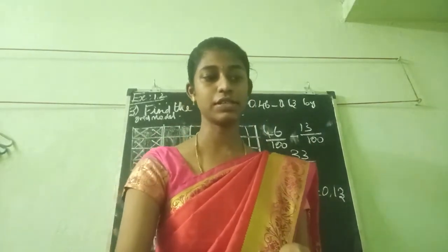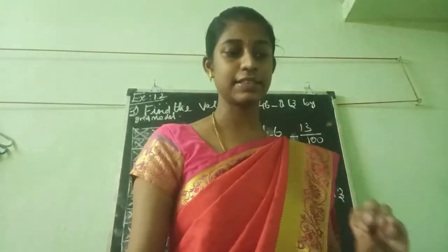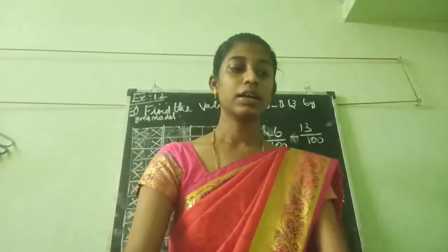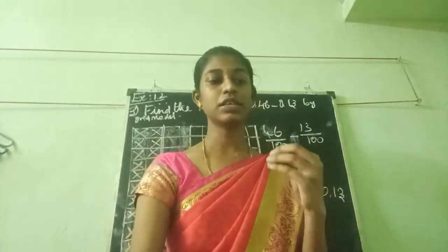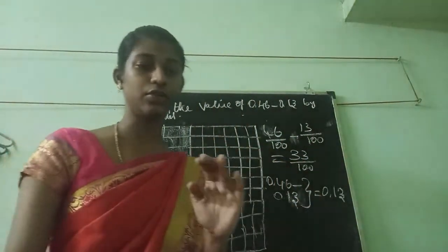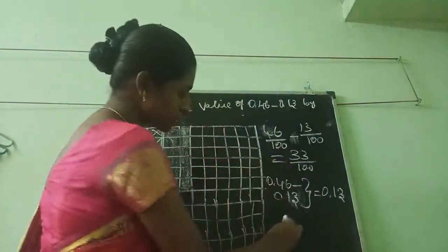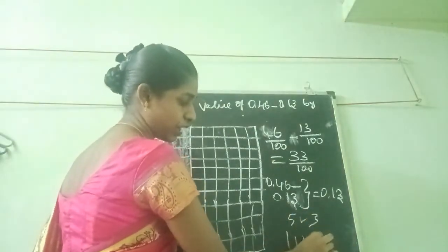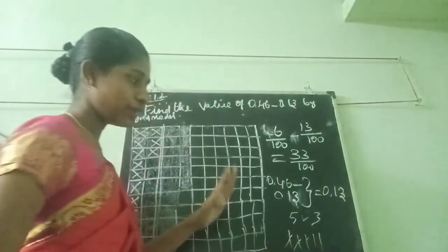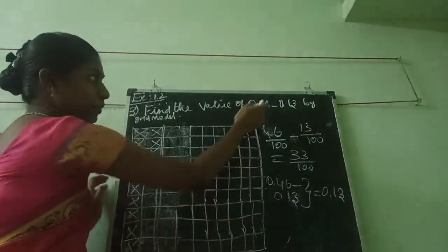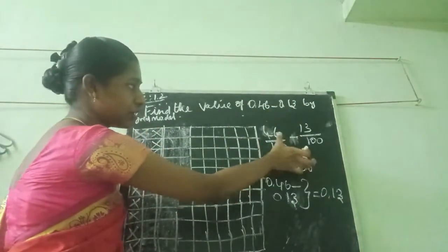Now we are going to see about subtraction. I am reading the question: find the value of 0.46 minus 0.13 by using grip model. Grip model means same itself. Now you want to do the subtraction — like in small age, 5 minus 3: you put 5 marks and cancel. I am writing this question in fractional method.